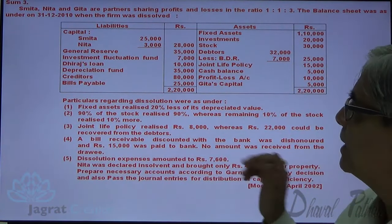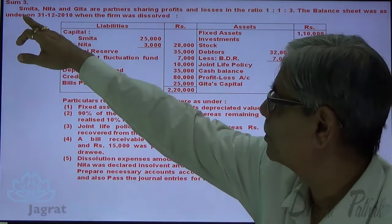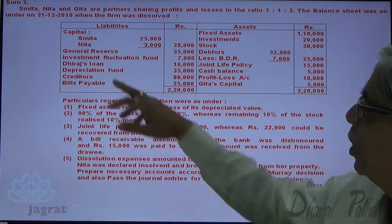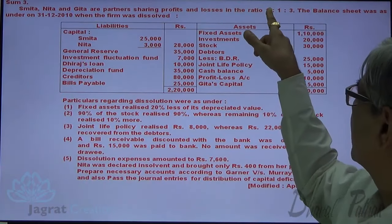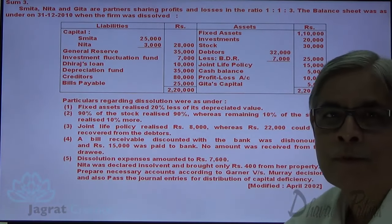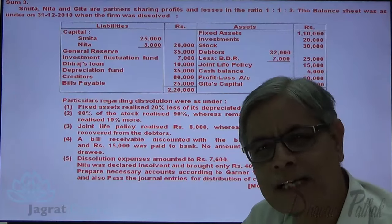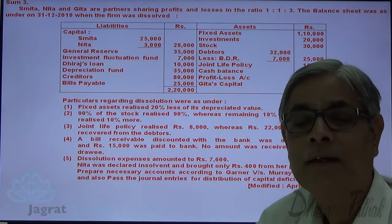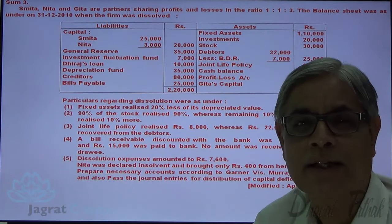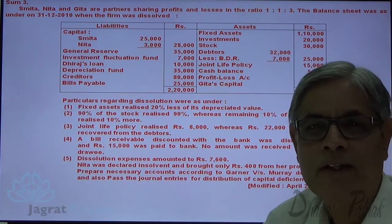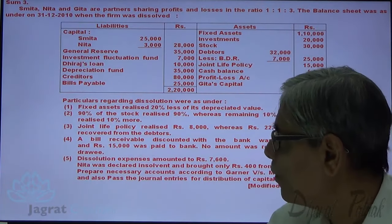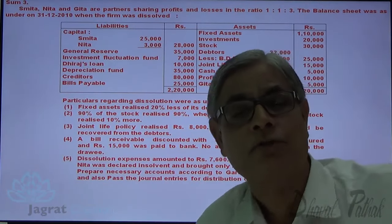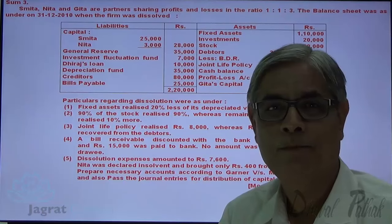Here, Nita is insolvent. The share of Smita and Gita is 1:3. Nita's share is 1. So the capital deficiency loss of Nita cannot be distributed in the ratio of 1:3 between Smita and Gita, because that is an agreed ratio for distributing business profits and losses, and the capital deficiency of a partner is not a business loss. It has to be distributed in the ratio of capital that existed on the date of dissolution, as pronounced by Justice Joyce in Garner versus Moore. Also, solvent partners are required to bring cash equivalent to their share in the realization loss.